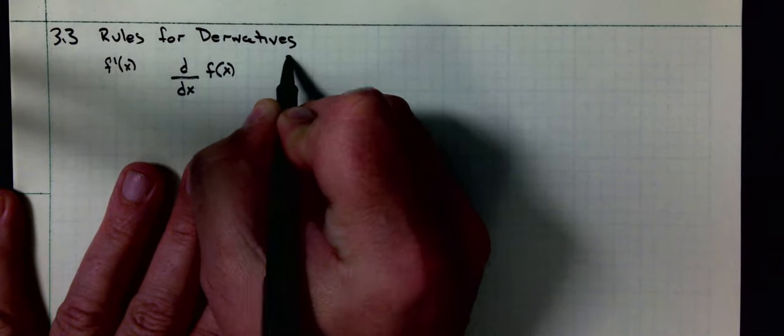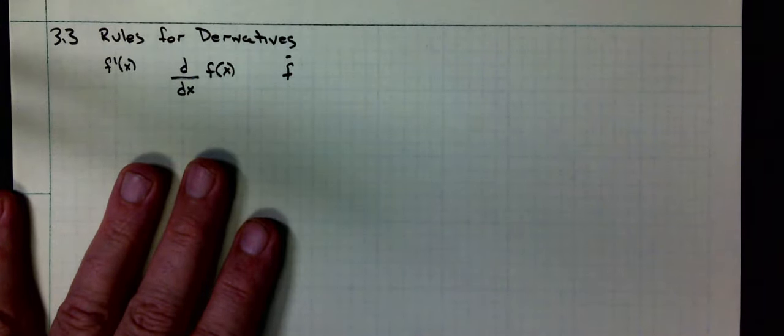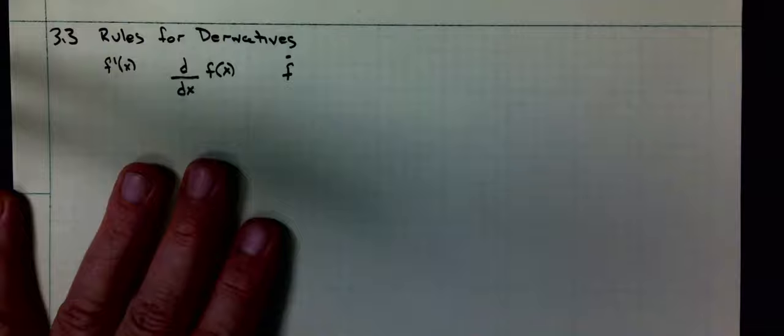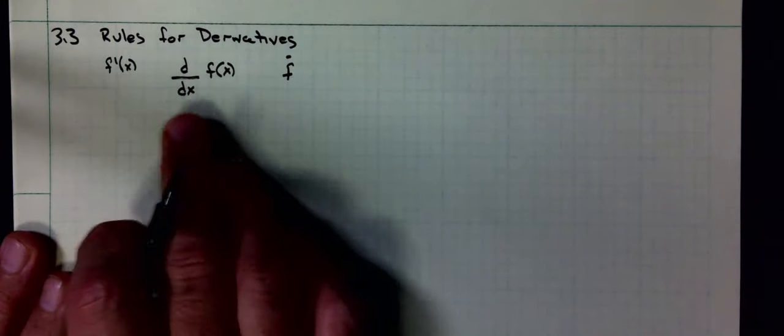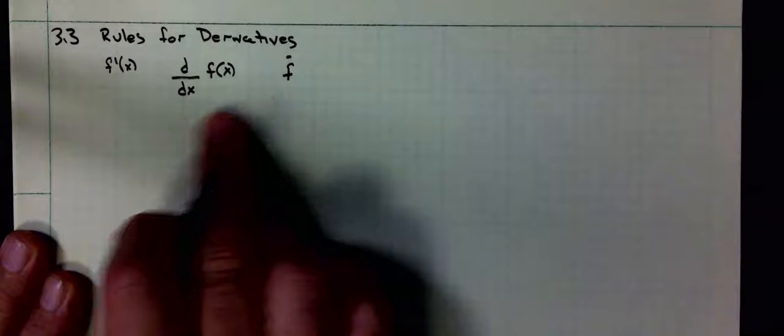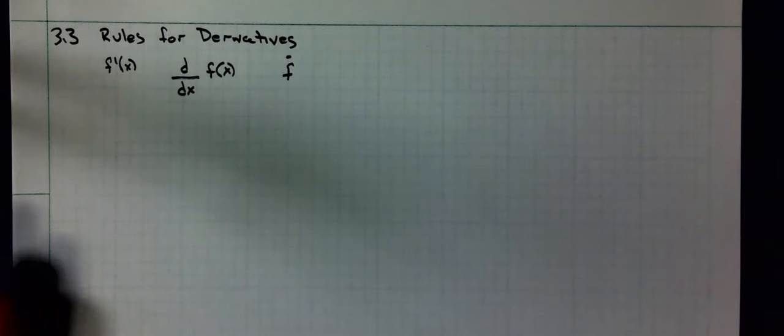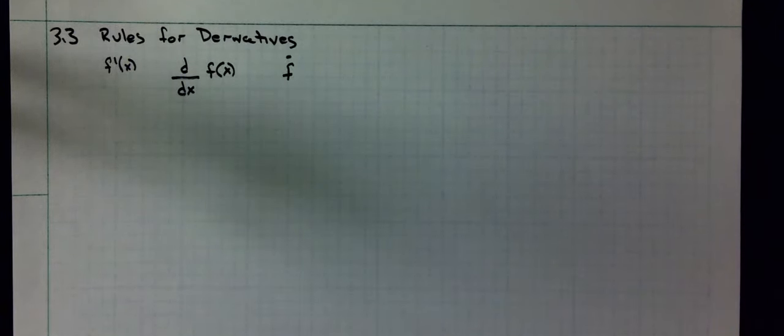You may see in a physics class just a dot over the f. Regardless of the way we write the thing as a derivative, we have some basic rules we can come up with.